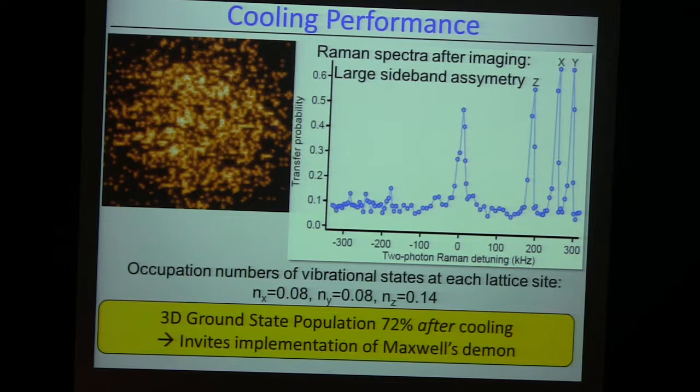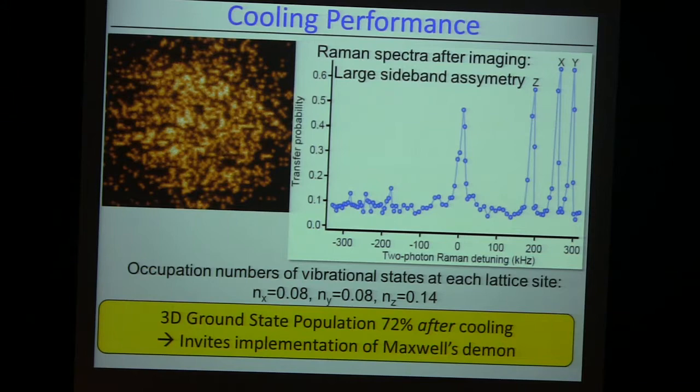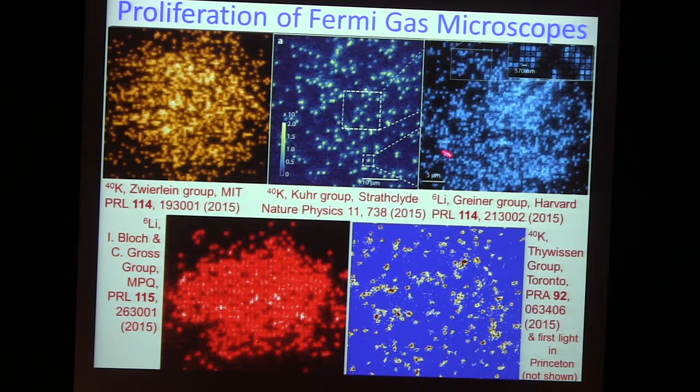The cooling is really quite good. This shows the Raman spectrum from this gas. A Raman spectrum analyzes how many vibration states are occupied. If you're in the lowest one, you will not have a red sideband — you cannot go into a lower vibration state because you're already in the ground state. So indeed the red sideband is missing. We only have the blue sideband, very strong. That tells us we have a very low occupation — only around 10 percent vibration excitation. Most of the time the atoms are in the ground state.